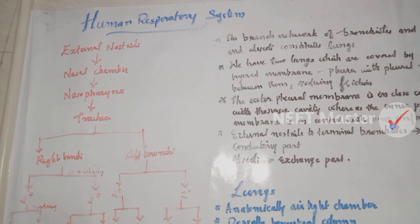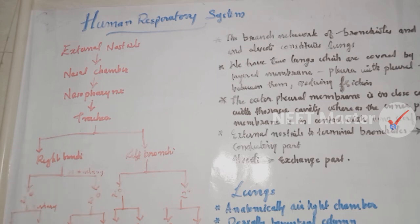In the pharynx, it is a common passage for both food and air. Food goes to the oesophagus and air goes to the trachea. The nasopharynx opens through the glottis of the pharynx region into the trachea. The larynx is a cartilaginous structure which helps in sound production, and hence is called the sound box.